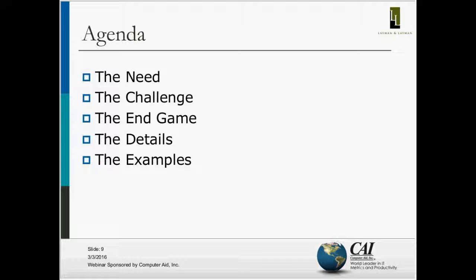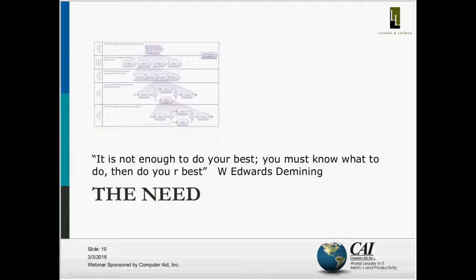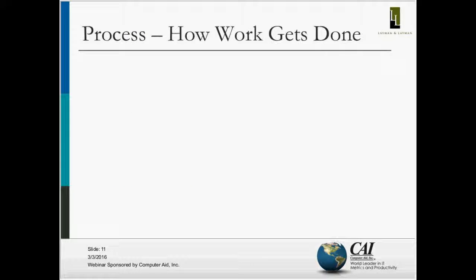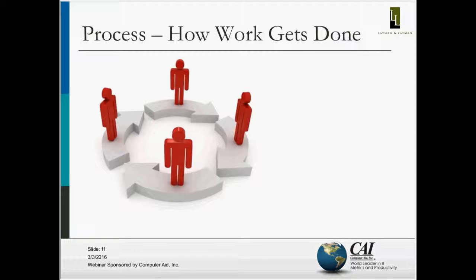I think this is fairly agnostic, although a lot of the examples — because we do a lot of work in the software, systems, and IT world — are going to reflect that. I've got quotes to share, and of course we have to start with Deming: 'It's not enough to do your best, but you must know what to do and then do your best.' That really hits on the point of this section. The process defines how the work gets done.